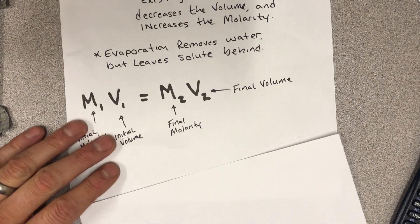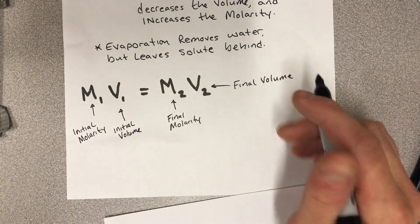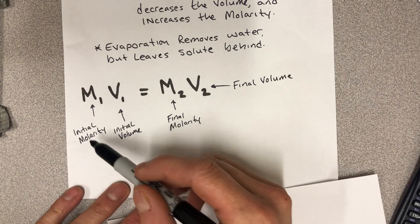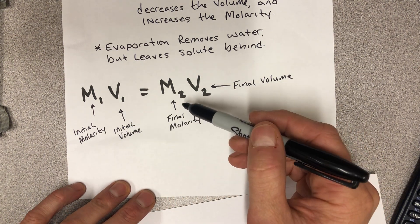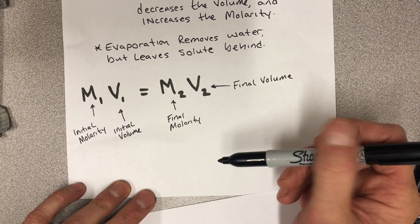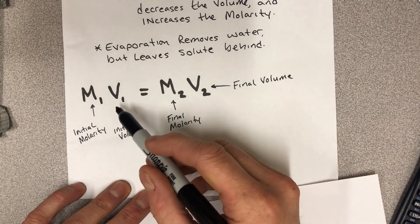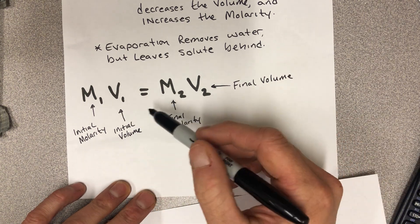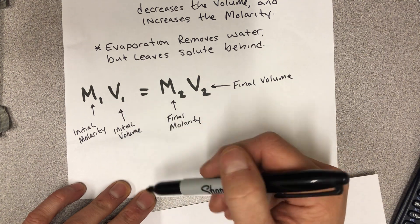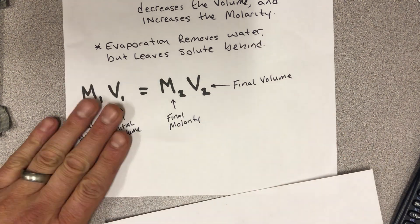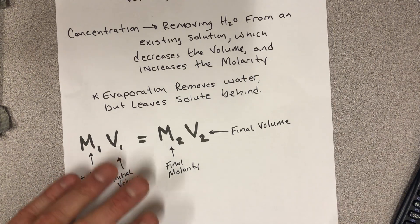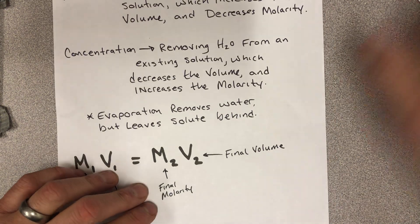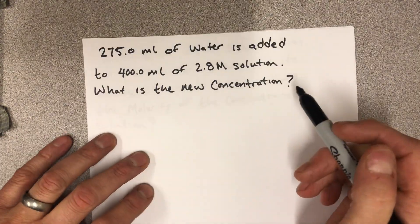Like everything we do, there's a math equation: initial molarity multiplied by initial volume equals final molarity times final volume — M1V1 = M2V2. The volumes don't have to be in any specific unit as long as the units match on both sides. That's the equation for dilutions and concentration.